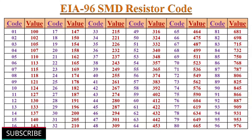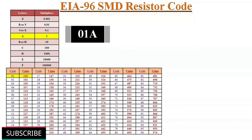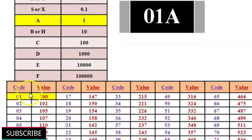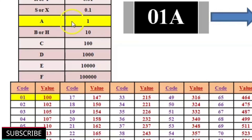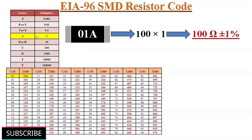By using these two tables, we can find the resistance value of EIA-96 coded SMD resistors. For example, if the EIA-96 code is 01A, the first 2 digits 01 correspond to the value 100, and the letter A has a multiplying factor of 1. Therefore, the resistance value is 100 multiplied by 1, which equals 100 ohms.